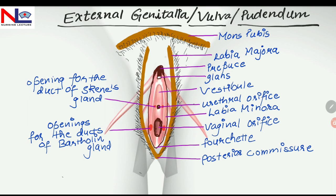The last structure is the vestibule, a triangular space bounded anteriorly by the clitoris, posteriorly by the fourchette, and on either side by the labia minora. It has various openings as you can see in this figure.